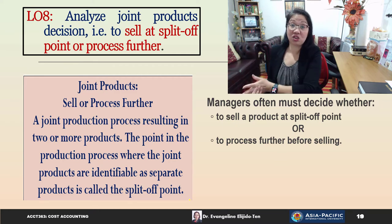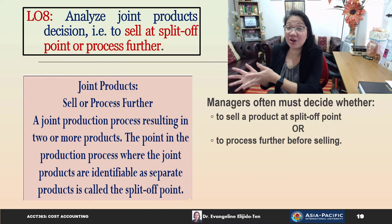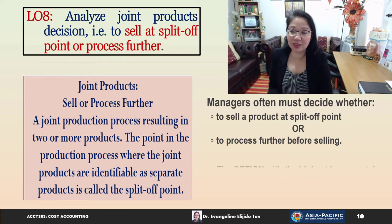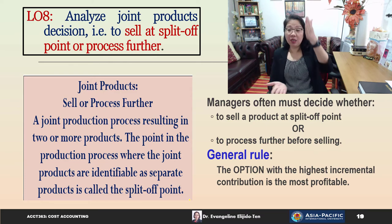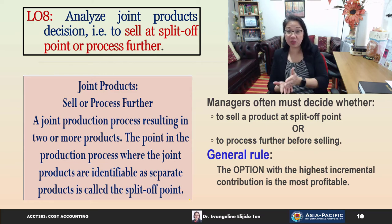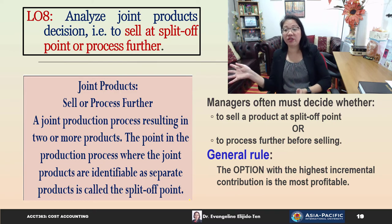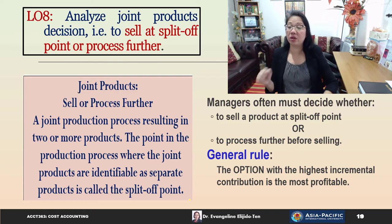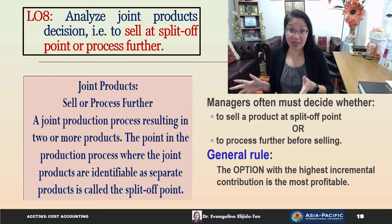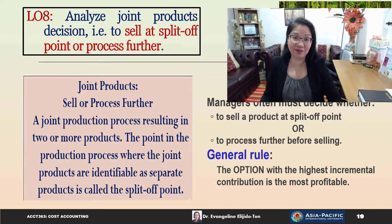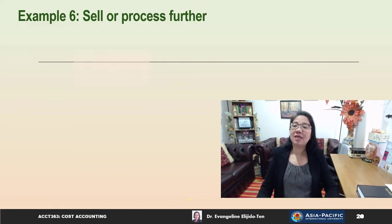The general rule is that we decide whether to sell at split-off point or to further process depending on which alternative yields the highest incremental contribution margin. Let's look at the Chocoholic Company example, which processes cocoa beans.